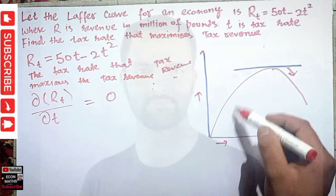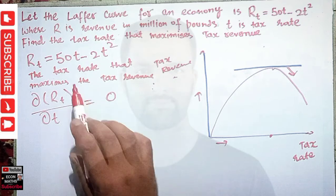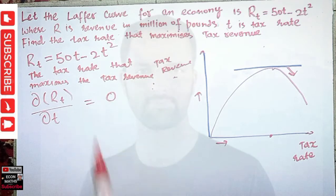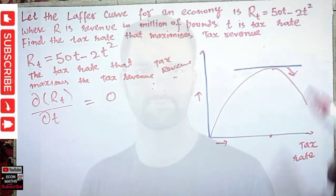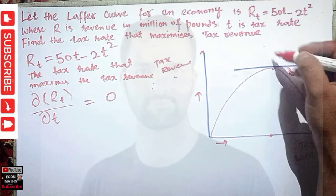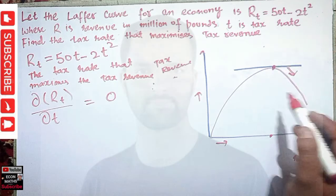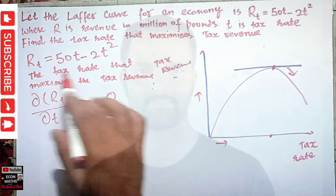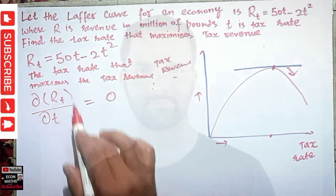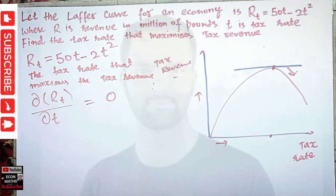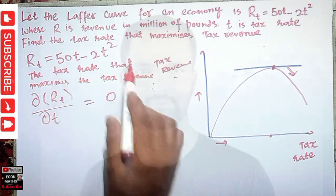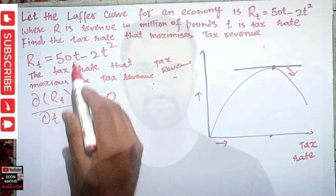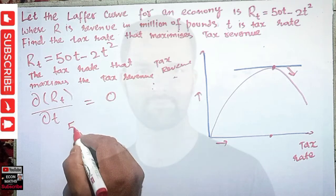The tax rate that maximizes our tax revenue is given when the slope of this curve equals zero. This means we have to differentiate our revenue function with respect to t and set it equal to zero.